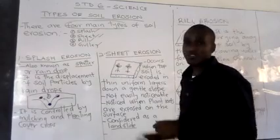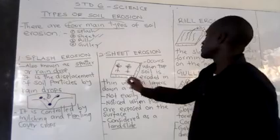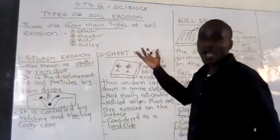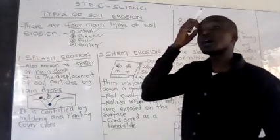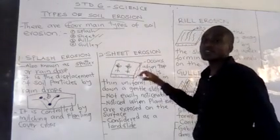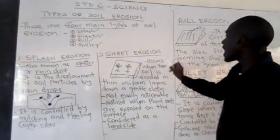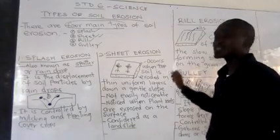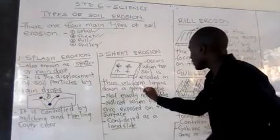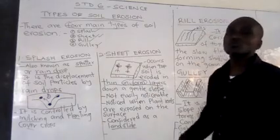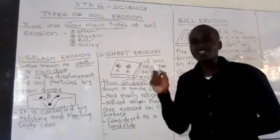Number two is sheet erosion. You can see the picture here. How do I identify sheet erosion? You can see the roots of plants hanging outside — remember, roots are supposed to be inside the soil. When you walk around and see roots of some plants exposed above the surface, that indicates sheet erosion. Sheet erosion occurs when topsoil is eroded in thin, uniform layers, which makes it hard to notice.